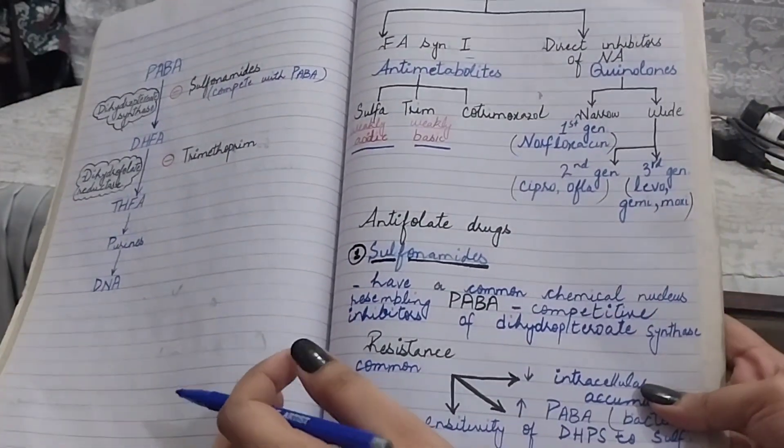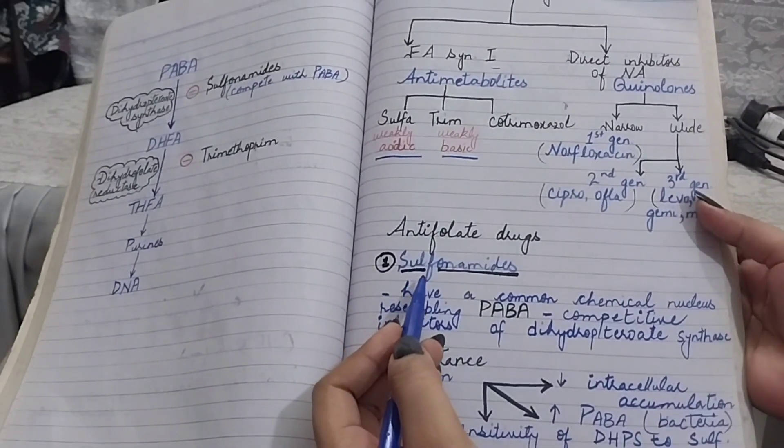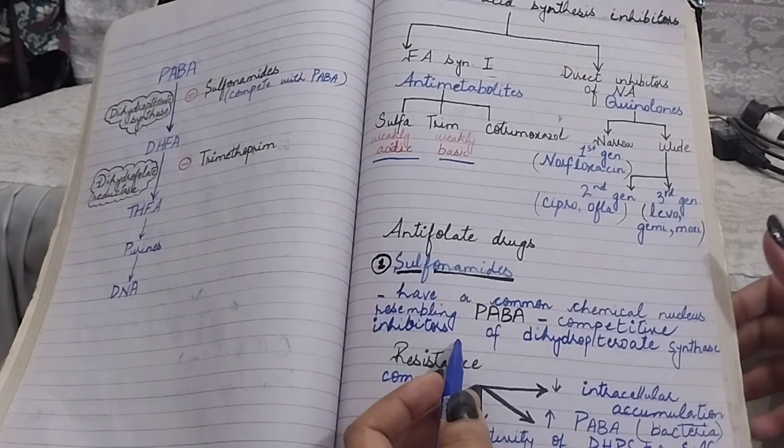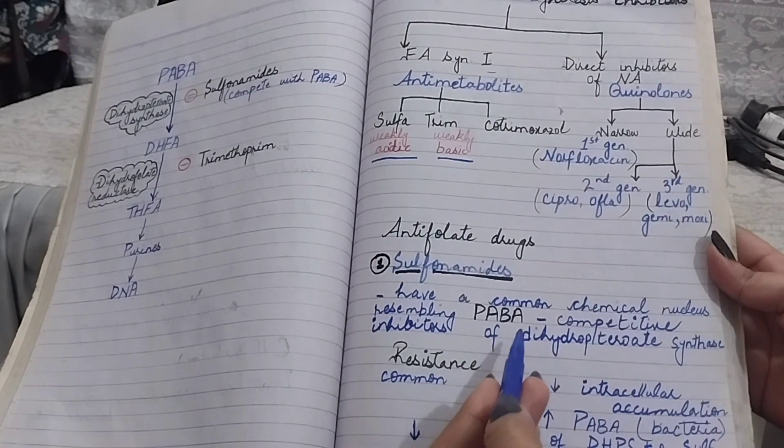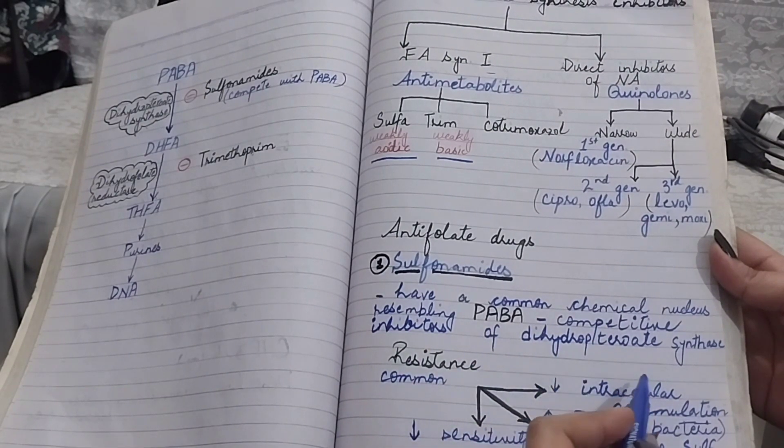From antifolate drugs, the first one we have is sulfonamides that have a common chemical nucleus resembling PABA. As I told you, sulfonamides act as a competitive inhibitor of dihydropteroate synthase.